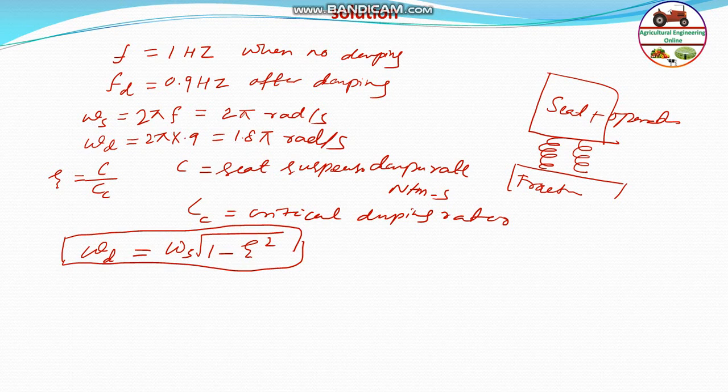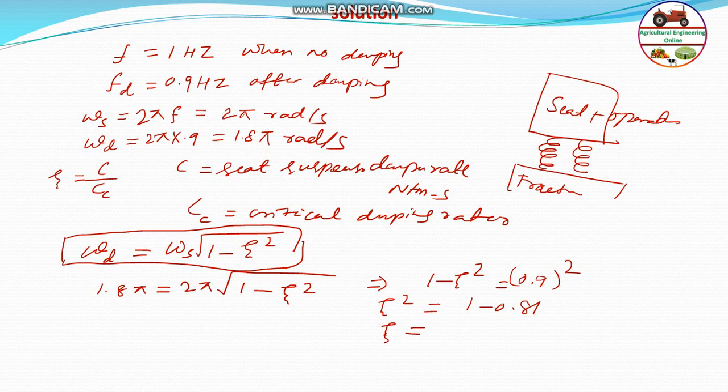ωd is given, that is 1.8π, which equals 2π square root of 1 minus ζ squared. Therefore, 1 minus ζ squared equals 0.9 squared equals 0.81. The damping factor ζ equals square root of 1 minus 0.81, which is 0.19, and the square root of 0.19 is approximately 0.44.